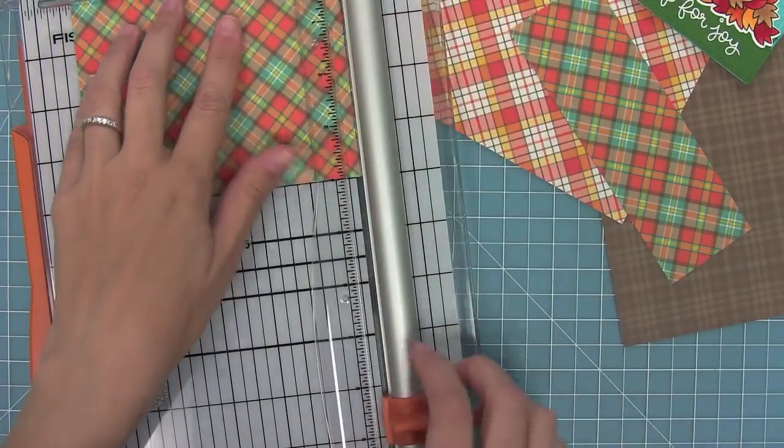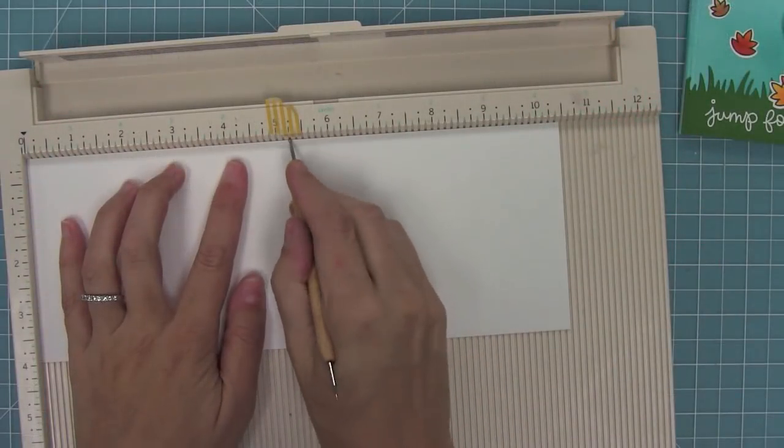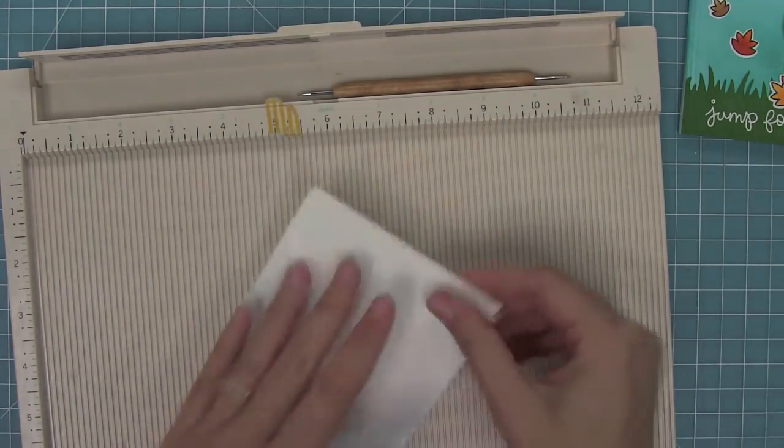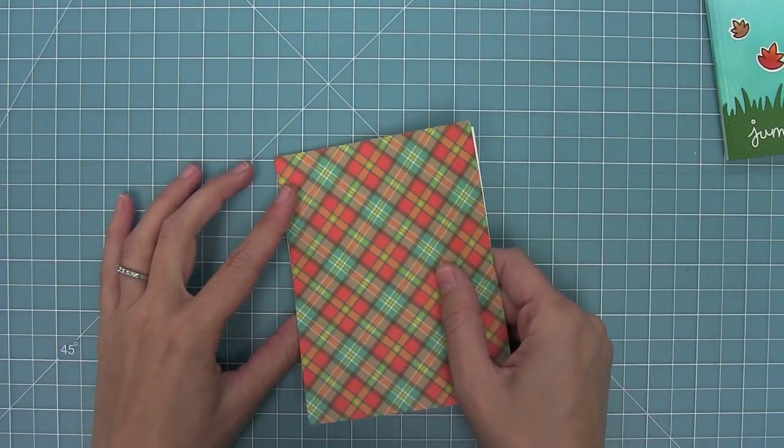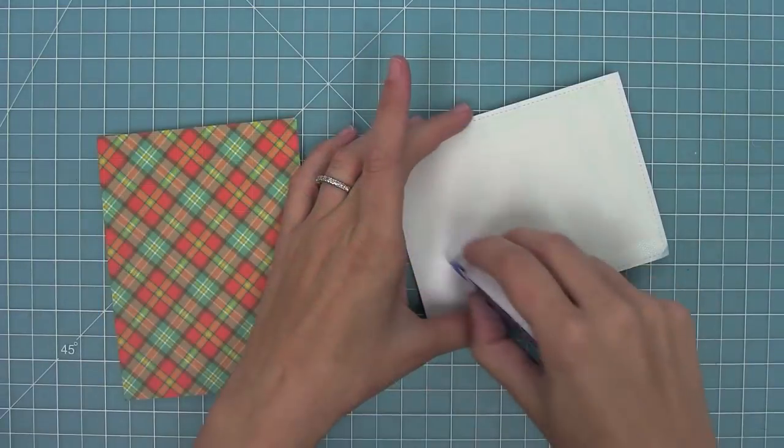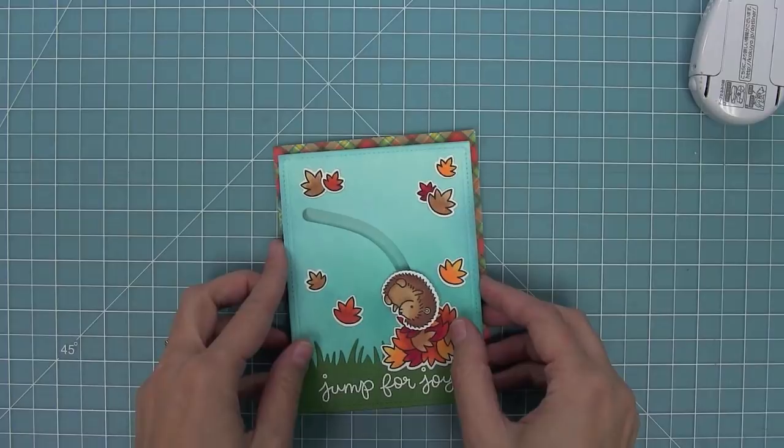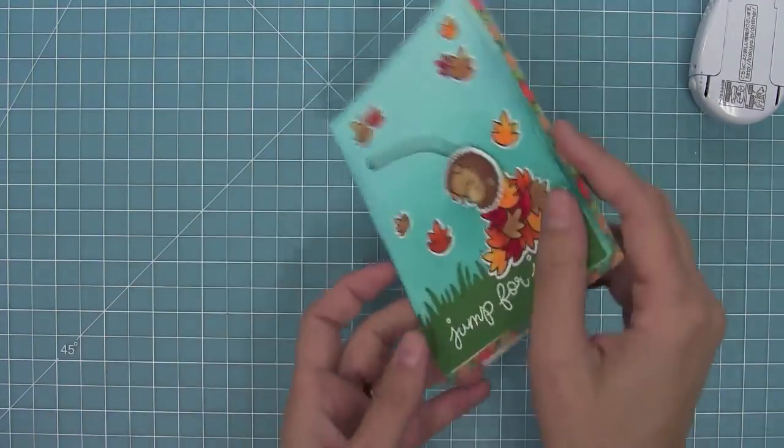I've got a card base here that is five and a quarter by four. Fold that, add my pattern paper to the front, and then I can add a ton of tape to my whole slider mechanism here and adhere that. That pattern paper is going to give it just a nice little frame to finish off the card.